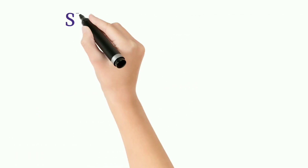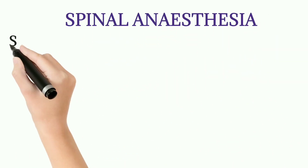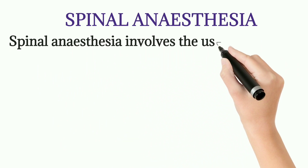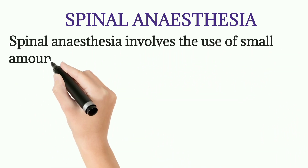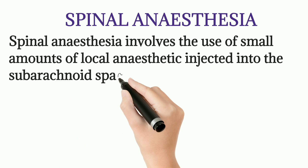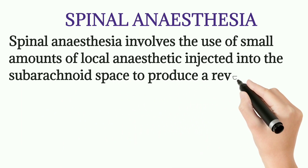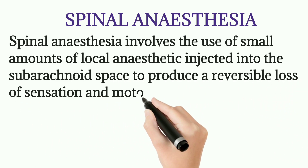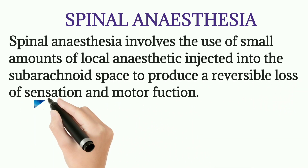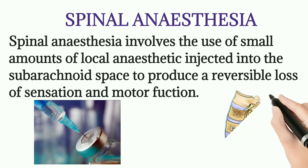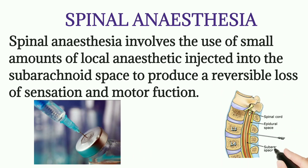Spinal anesthesia involves the use of small amounts of local anesthetic injected into the subarachnoid space to produce a reversible loss of sensation and motor function. The local anesthetic is injected into the subarachnoid space to block both motor and sensation function.